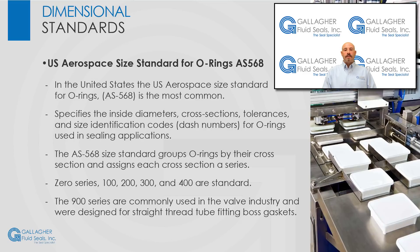Next, we are going to discuss dimensional standards. O-rings are measured by their inside diameter and cross section, but O-rings can also be referenced by their size within a specific O-ring sizing system. These standards exist to make communication easier, so that rather than specifying exact dimensions, a dash size can be utilized and everyone will know what is being referenced. In the United States, the U.S. Aerospace Size Standard for O-rings — AS568 — is the most common. Although the standard references aerospace, it is used across all industries. The AS568 standard specifies inside diameters, cross sections, tolerances, and size identification codes or dash numbers. This sizing chart is available for download from GFS and specifies the O-ring dash sizes with their specific dimensions and tolerances.